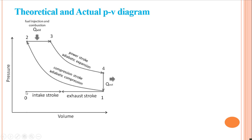The suction stroke (zero to one in the PV diagram) and exhaust stroke (one to zero) take place at atmospheric pressure and work through 180 degrees of crank rotation. The compression stroke (one to two) and expansion stroke (three to four in the PV diagram) are isentropic and also take place through 180 degrees of crank rotation.